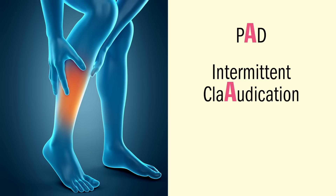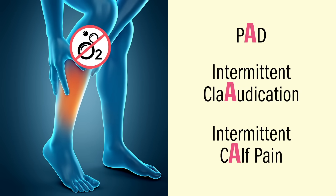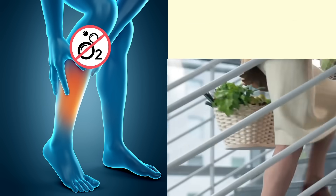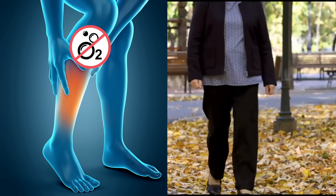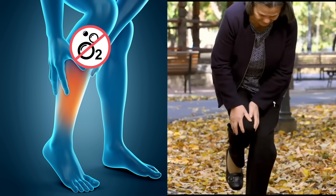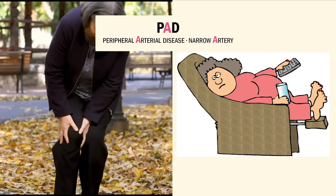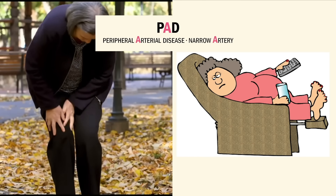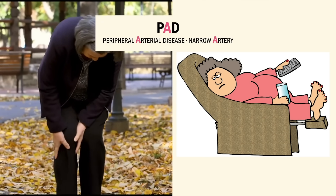Remember: intermittent claudication is intermittent 'calvication' because it causes pain in the calves. The emphasis is on the A — for PAD — so claudication for calvication. Why does this happen? Exercise like walking up stairs or across a parking lot means the muscles use more oxygen than at rest, so the lack of oxygen causes calf muscle pain. When the legs are elevated, it's harder to pump blood uphill, so low oxygen equals more pain.